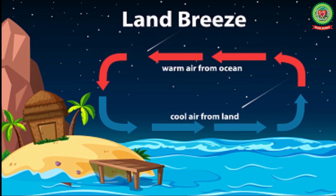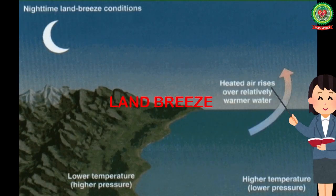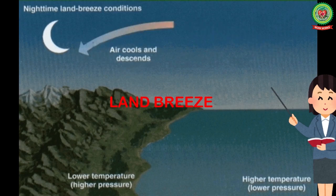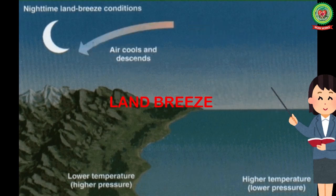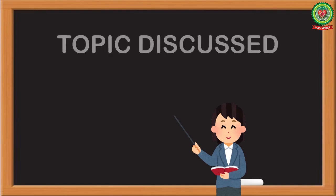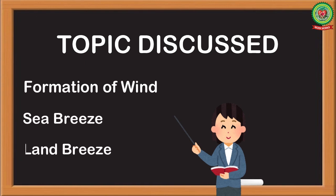Next is land breeze. At night, the land becomes cooler faster than the sea, and the sea water remains warm. So the air above the sea is warmer than the air above the land. The warm air above the sea rises up and cold air from the land moves towards the sea to take its place. This cool air blowing from land to sea at night is called land breeze.